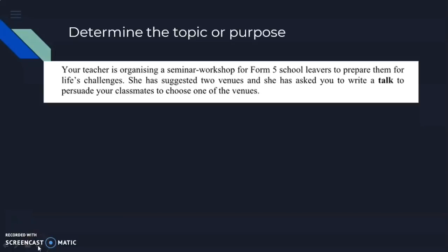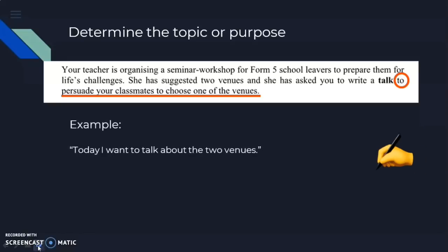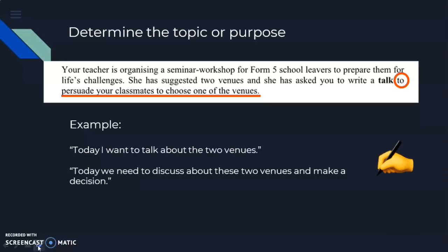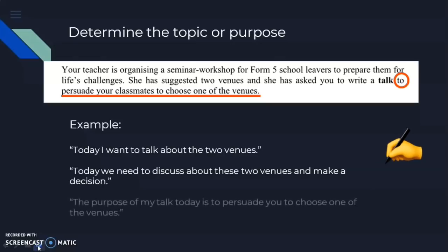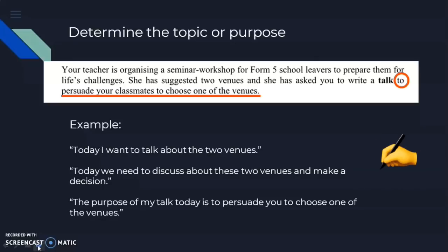So from the instruction, the word 'to' tells you the purpose of your talk is to persuade your classmates to choose one of the venues. Examples of how to state your purpose: 'Today I want to talk about the two venues.' Or: 'Today we need to discuss about these two venues and make a decision.' Or very straightforwardly: 'The purpose of my talk today is to persuade you to choose one of the venues.' Now we are going to go through the content.